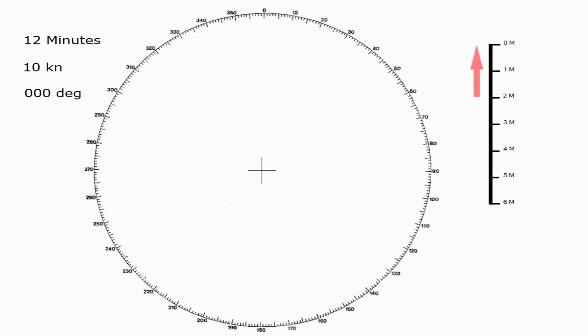This means our own vector is going to be 2 miles long, as measured on our scale, because in 12 minutes at 10 knots we would have travelled 2 miles. And then we're going to place it in the centre of the screen, pointing due north. This just represents our own true vector.